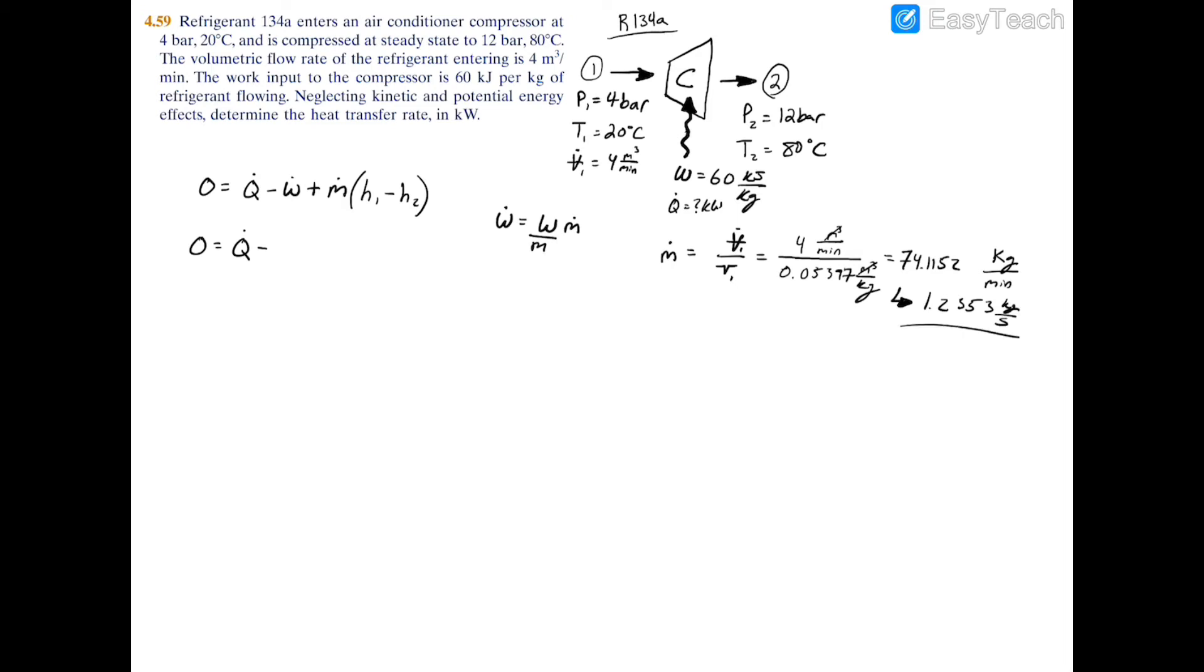So now we can solve for our power. So we'll have that W dot equals our work, which is 60 kilojoules per kilogram, times mass flow rate of 1.2353 kilograms per second. Kilograms and kilograms will cancel out, you'll have kilojoules per second, which is a kilowatt, and your power will equal 74.118 kilowatts.